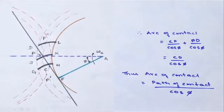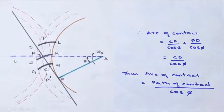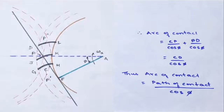The total arc of contact equals the arc of approach plus the arc of recess, giving cd / cos(phi) — that is, from point c to point d divided by cos(phi). Here cd is nothing but the path of contact. So the arc of contact can be expressed as the path of contact divided by the cosine of the pressure angle phi. This is the expression for the length of arc of contact.